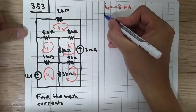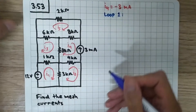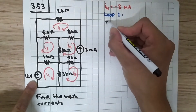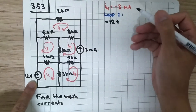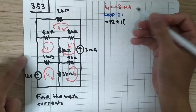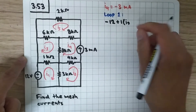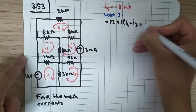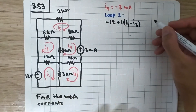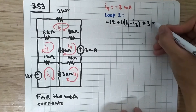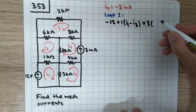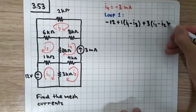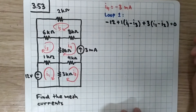Now let's do loop 1. We have a voltage source flowing from negative to positive, so the sign will be negative and the value is 12. Moving to the 1 kilo ohm resistance, we multiply by the loop current i1. Here i3 is flowing in the opposite direction, so we subtract i3. Moving to the 3 kilo ohm resistance, we have 3 times i1, and since i2 flows in the opposite direction, we subtract i2. This equals zero.